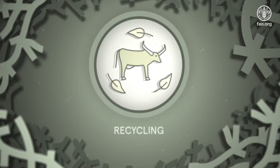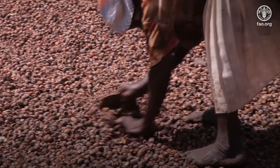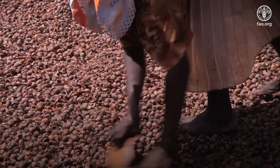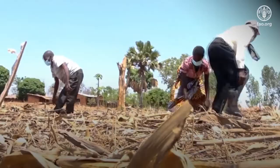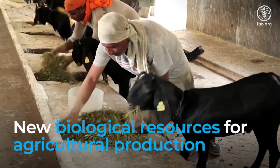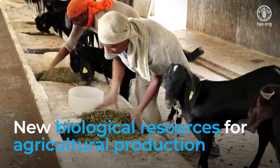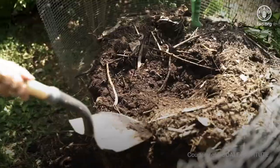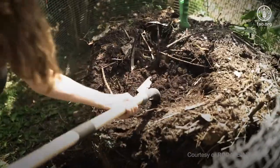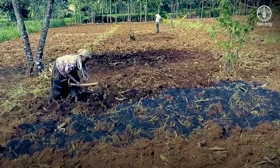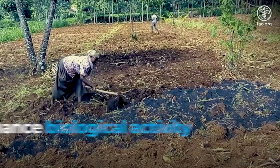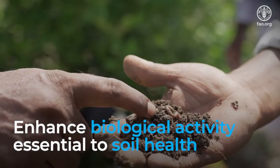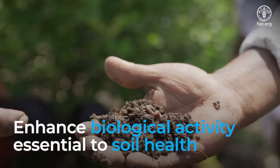Recycling is central to efficiency in agroecology, as it replaces the concept of waste and pollution with that of new biological resources for agricultural production. The return of organic residues to soil is a good example of recycling practices that enhance biological activity essential to soil health.